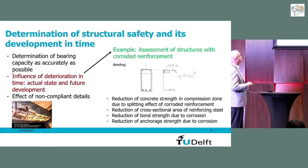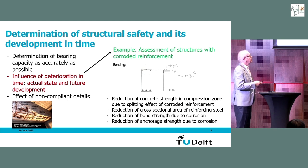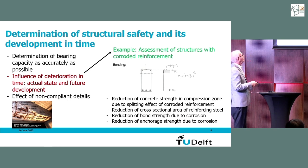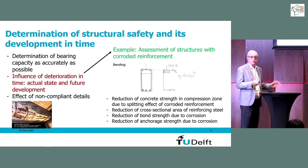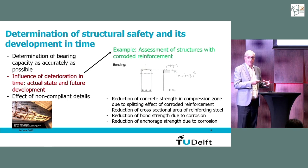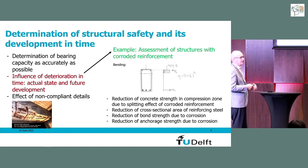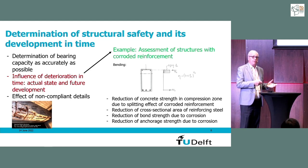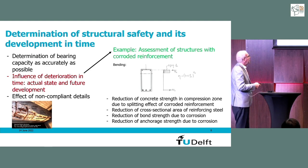For the determination of bearing capacity of a corroded structure: at the bottom we have reduction of capacity due to pitting or general corrosion, and at the top the cover is likely pushed off. Due to cracking around corroding bars, we can have a loss of bond and loss of anchorage. All these things have to be regarded. The ultimate strain of a corroded rebar is also very important in some cases.